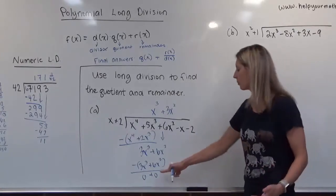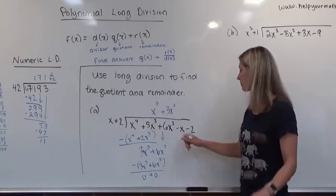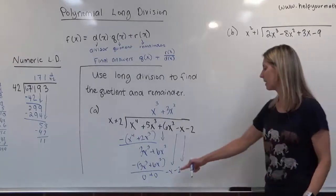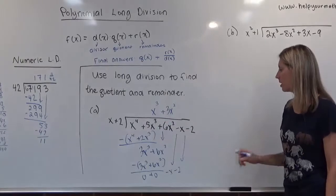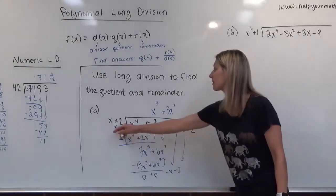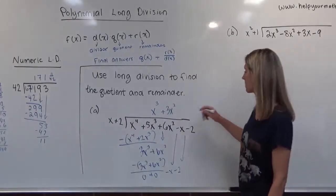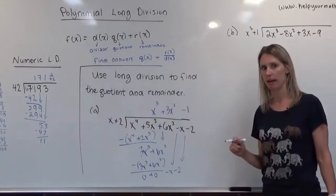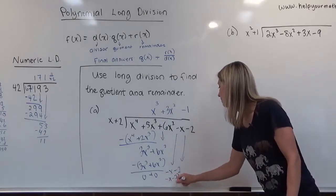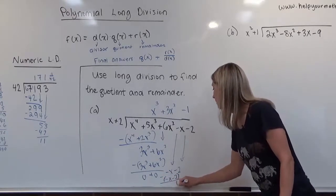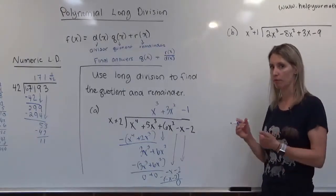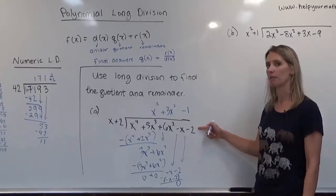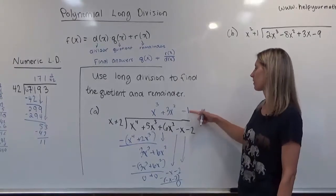Because everything canceled and I don't have a term here, I'm going to bring down the next two terms: -x and -2. How many times does x go into -x? It goes in -1 times, so minus 1. We multiply -1 by the divisor to get -x-2, subtract, and end up with nothing left. The remainder is 0, which means x+2 is a factor of the given polynomial.